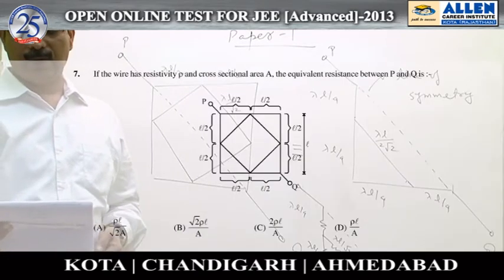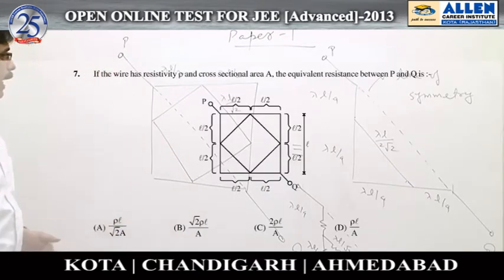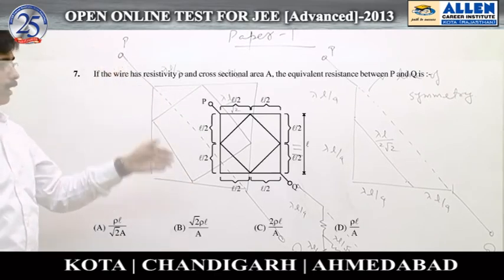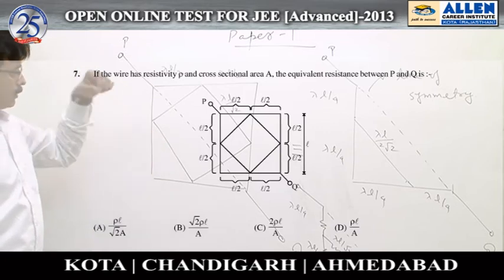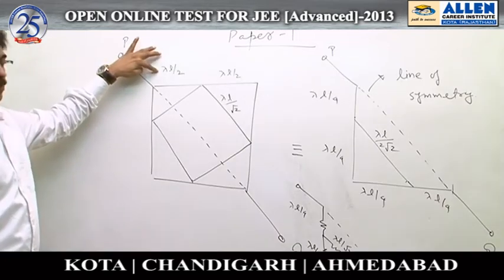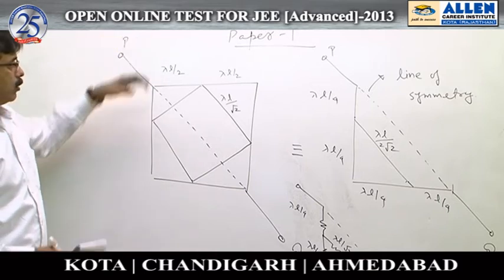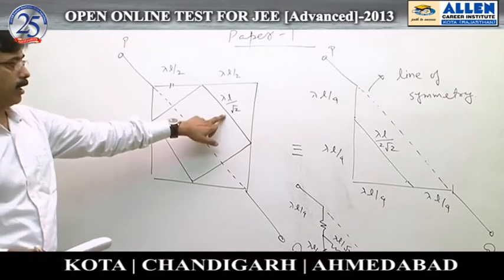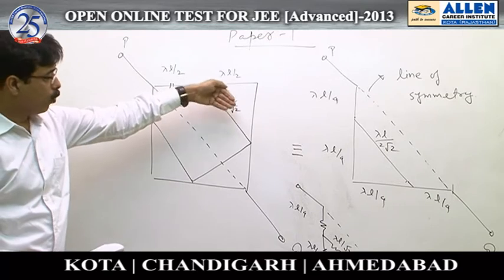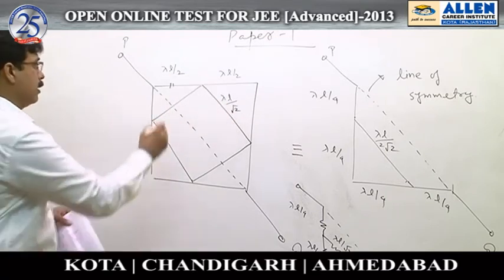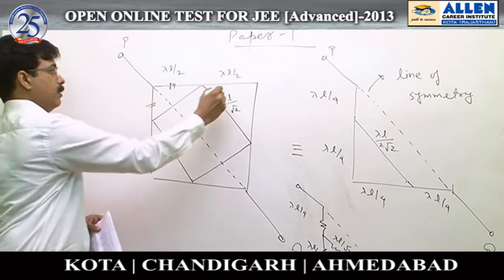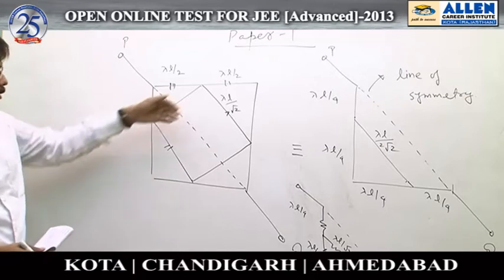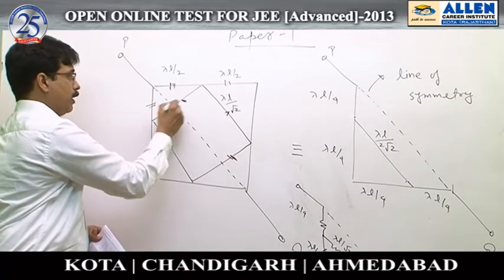In question number 7, we have to determine the equivalent resistance between points P and Q. As can be seen, this circuit is symmetrical about line PQ, so we can fold this circuit. This part of the circuit has resistance λL/2, this part has λL/√2. When you fold the circuit, this resistance becomes parallel to this, and this resistance gets short-circuited.